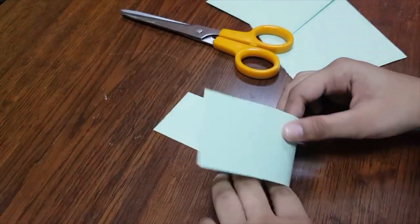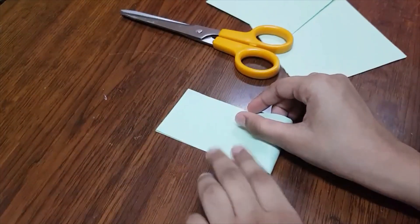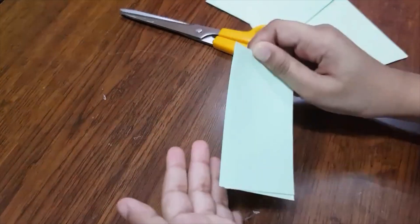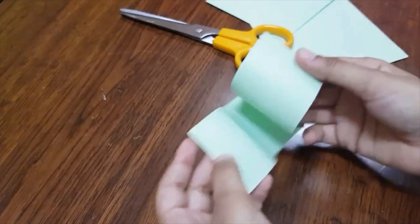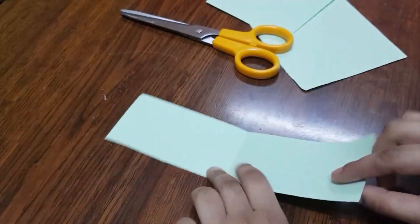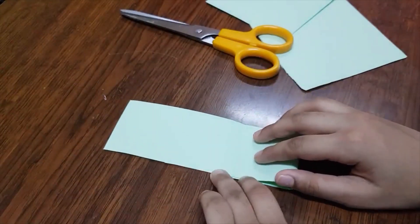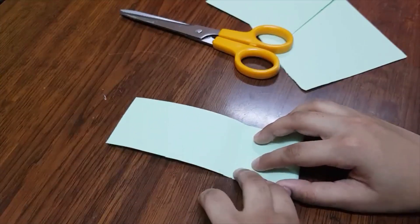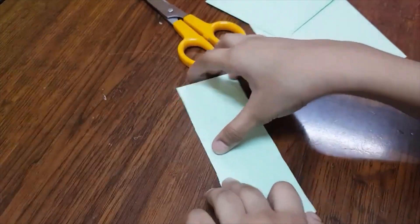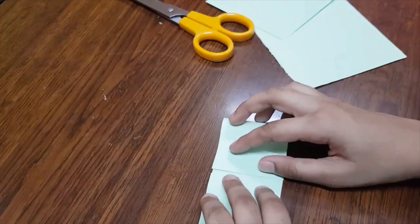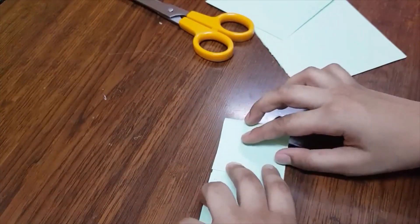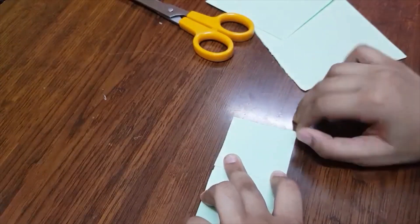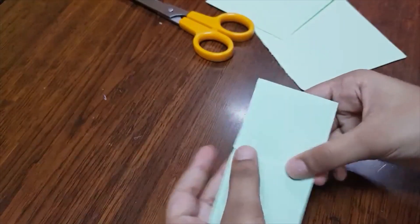Now what you must do is fold this paper into half, just like that. Now open it and fold it inwards, just like this. Do it like that, and then do the same from the other side.